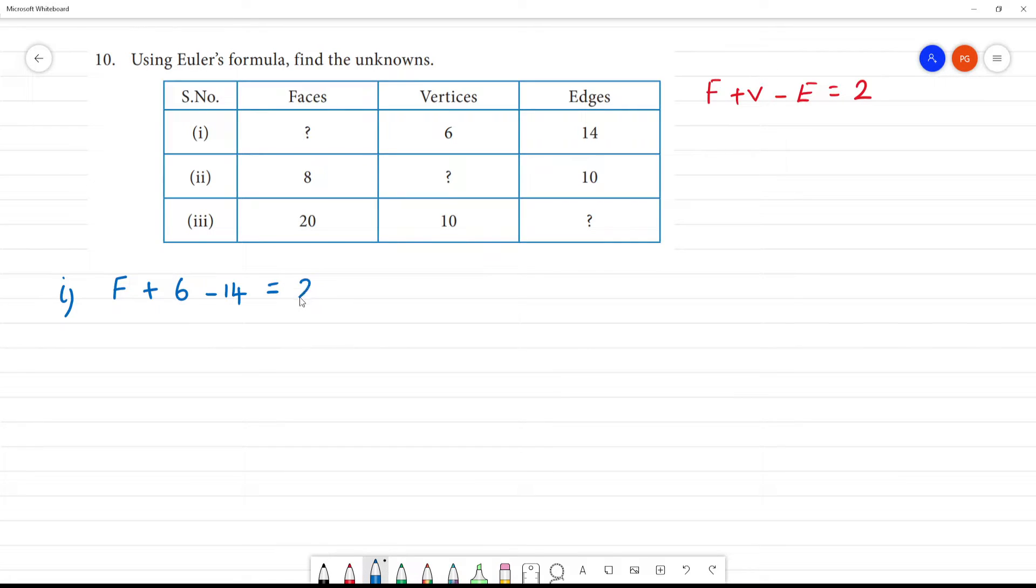So this is F + 6 - 14, which is minus 8, equal to 2. 6 minus 14 is minus 8 equal to 2. So F minus 8 is 2. This is minus 8, so F is equal to 10. How many faces? 10 faces. Clear?